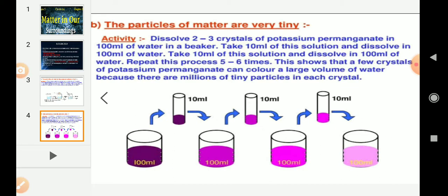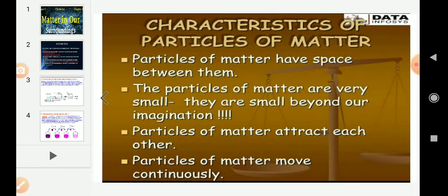What are the characteristics of particles of matter? First, particles of matter have space between them — between the particles of matter you will find there will be some space. Next, the particles of matter are very small, very very tiny. And next, particles of matter attract each other. Also, the particles of matter move continuously.